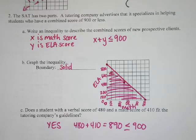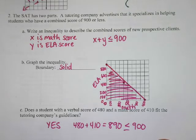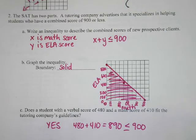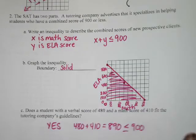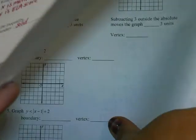So you graph the line, you decide whether it's solid or dashed, and then you shade. The last thing we need to talk about today is graphing absolute values on the coordinate plane.